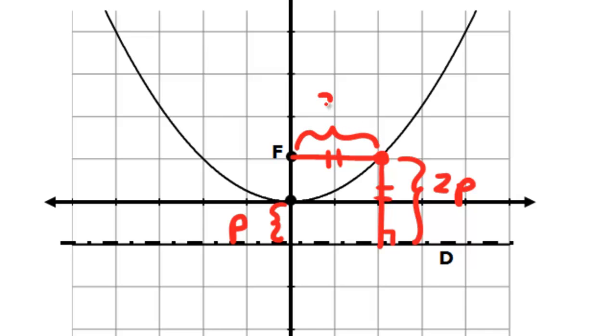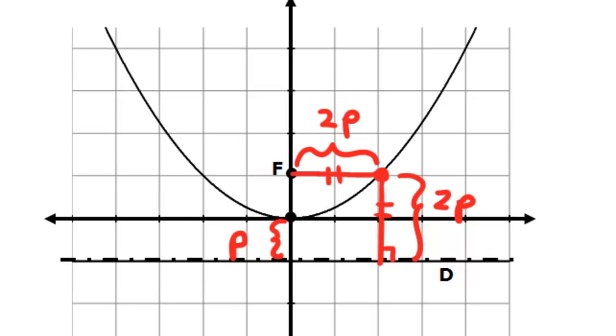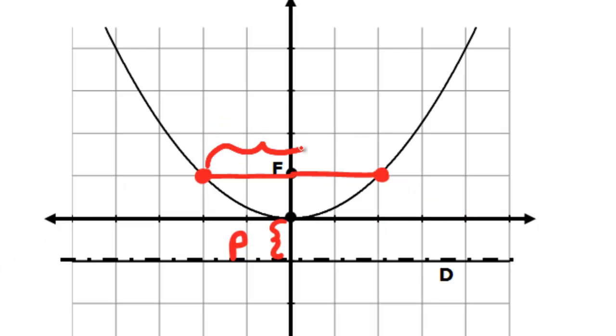If that's true, since those two segments are congruent, that distance is also 2P. Now let's go from the focus straight out in the opposite direction. By symmetry, that distance will be 2P as well, therefore making the total distance from endpoint to endpoint a distance of 4P.